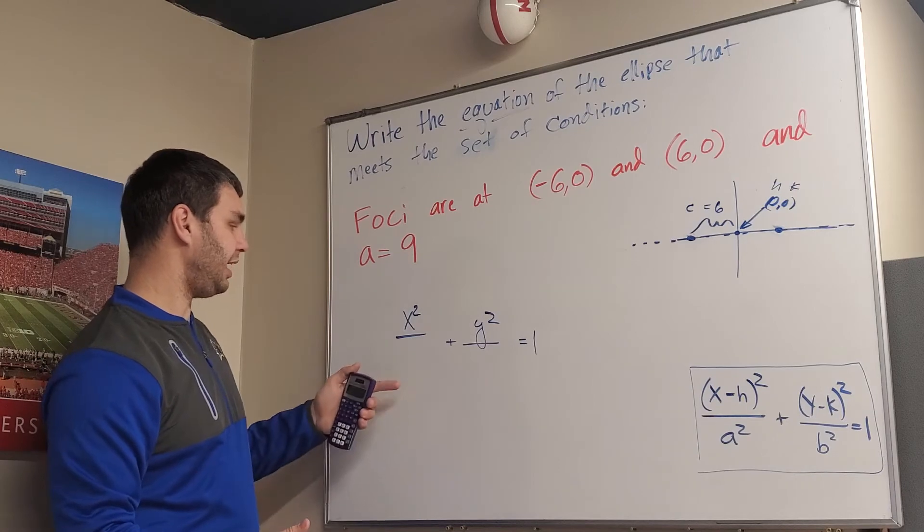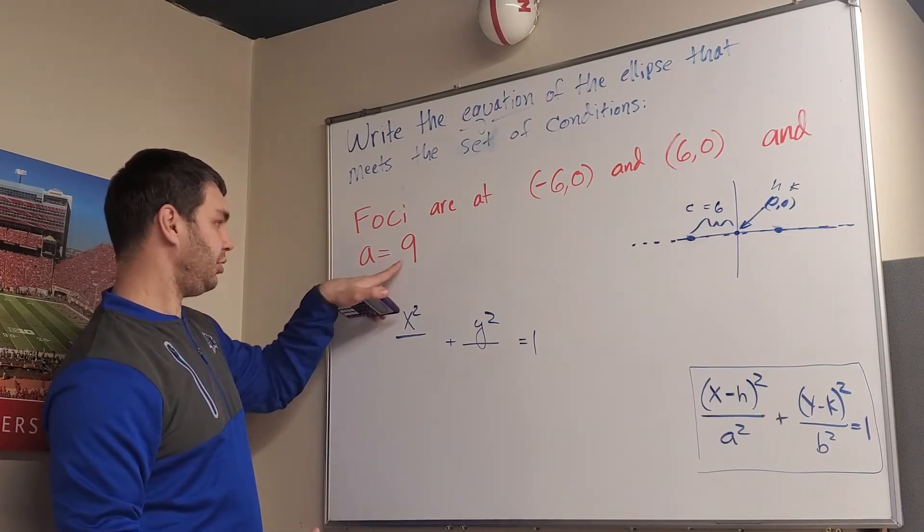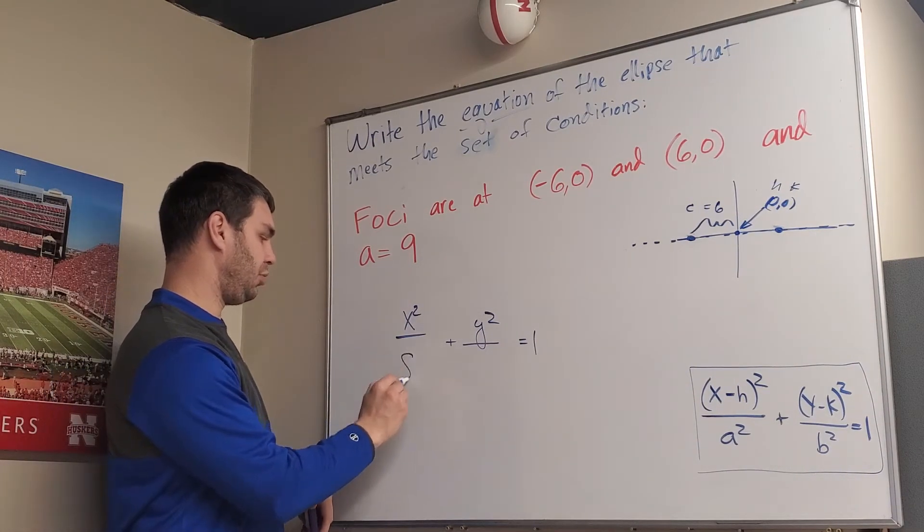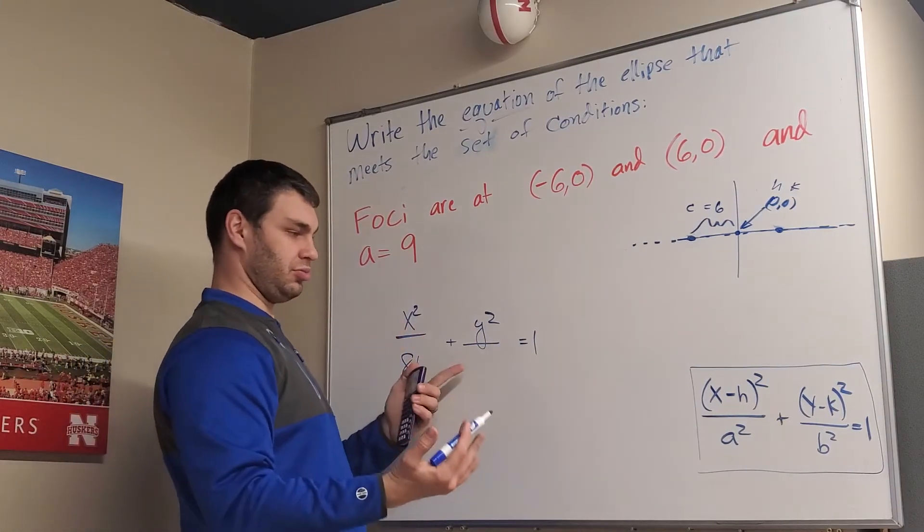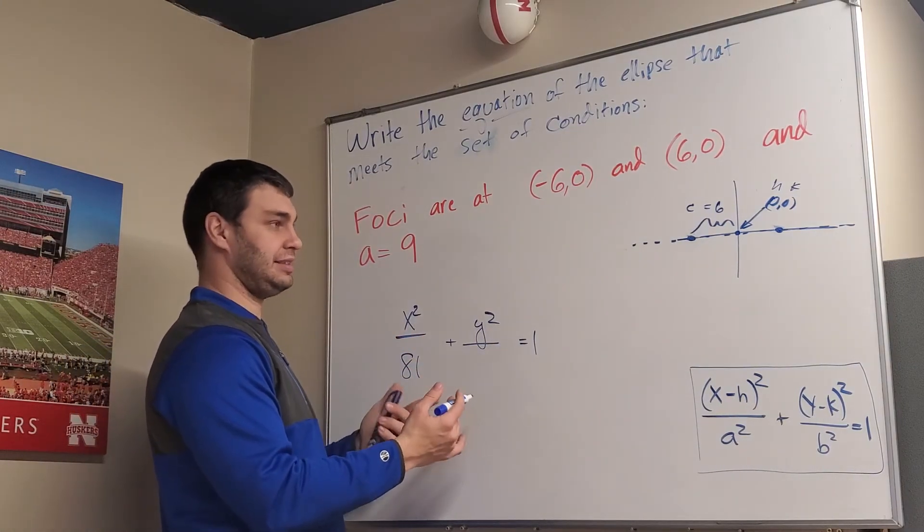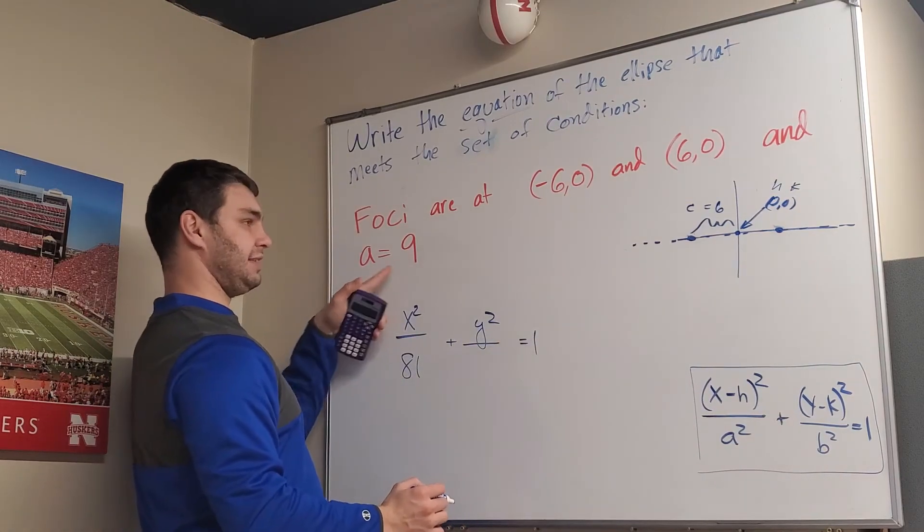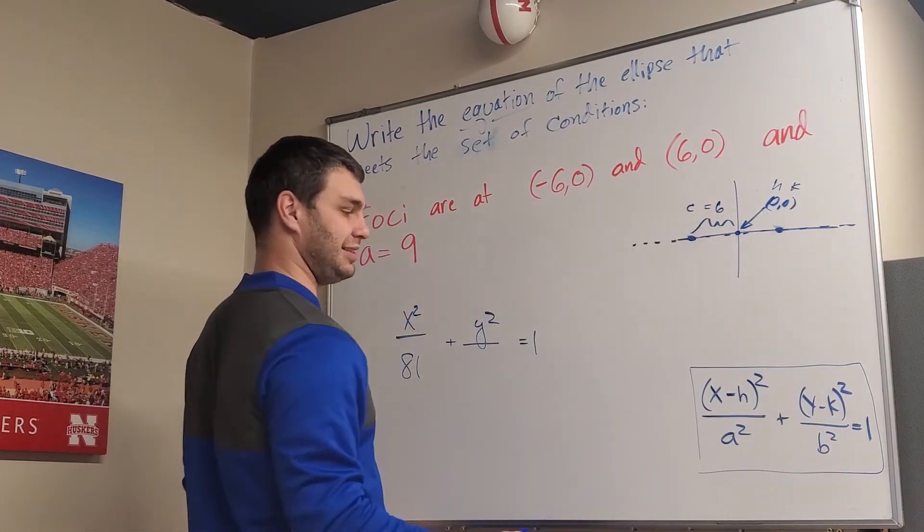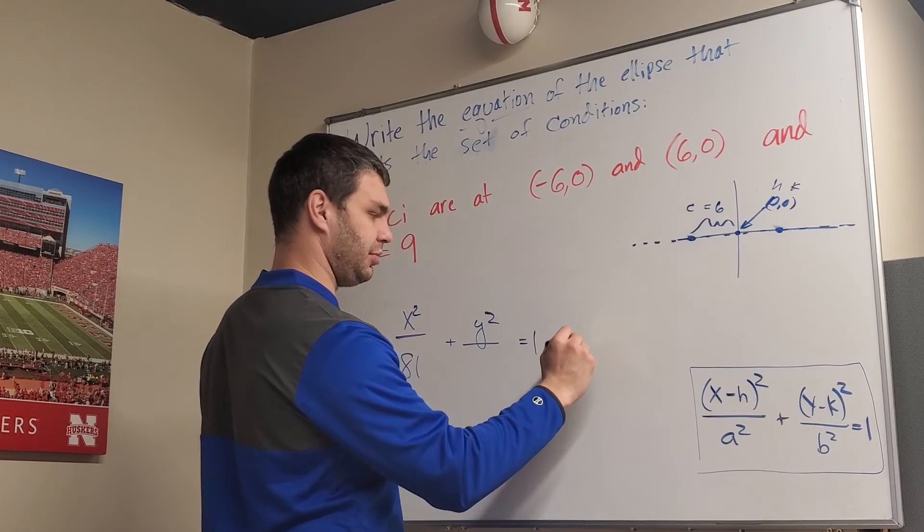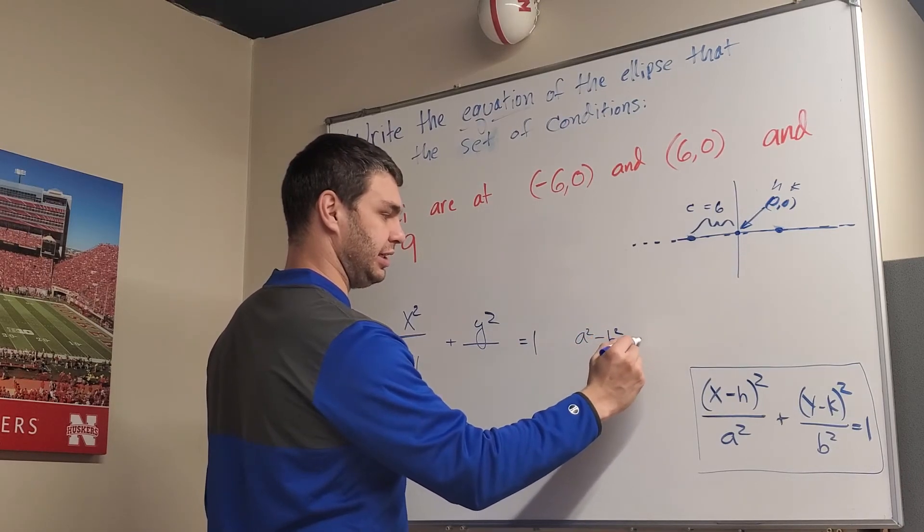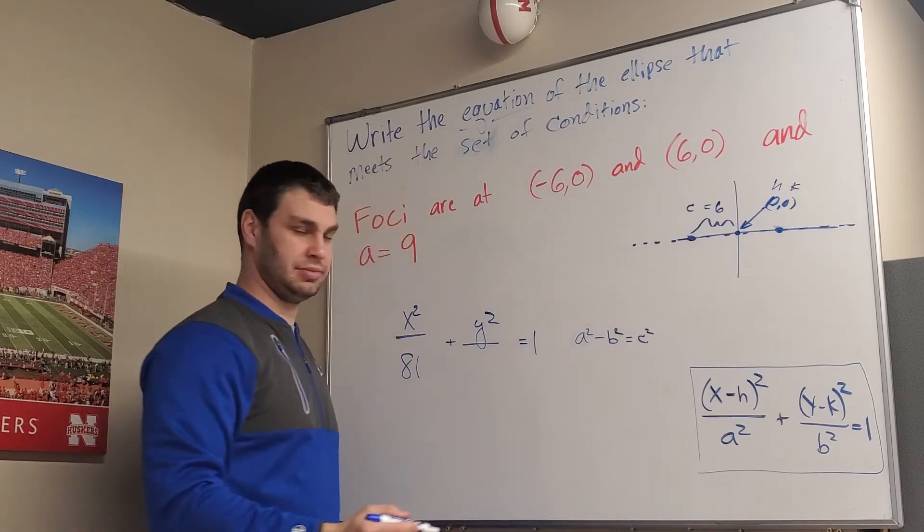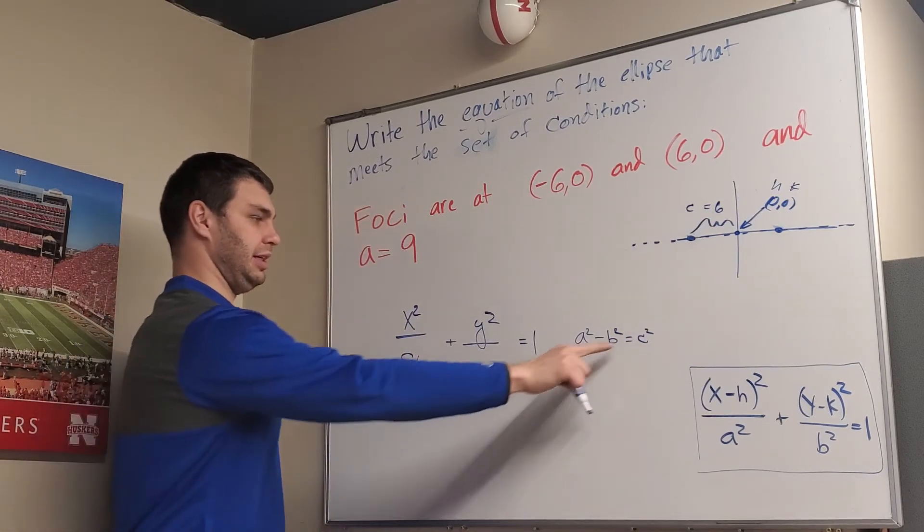But to do that, first I need a, which a² would be 81 in this case if a is 9. The other thing I need is b, and I don't really know that except I can use the fact that a is 9 and c we found earlier is 6. So we have to think back to the equation a² - b² = c².